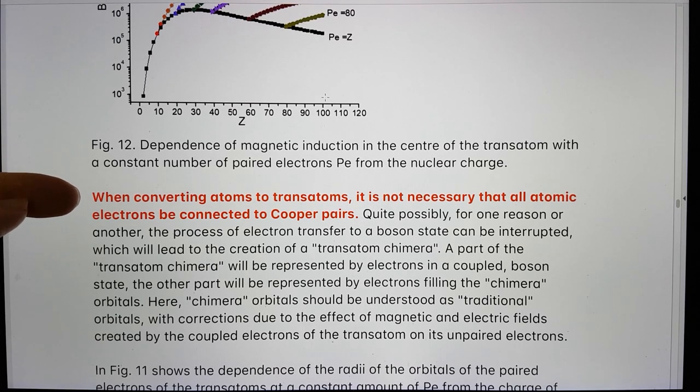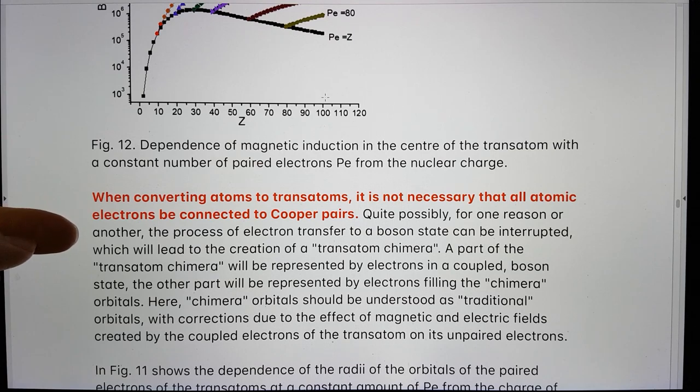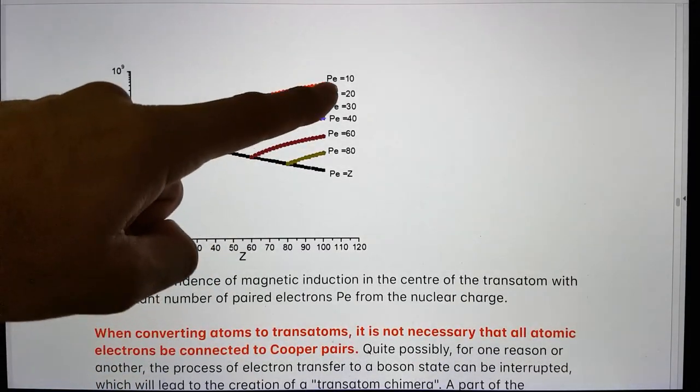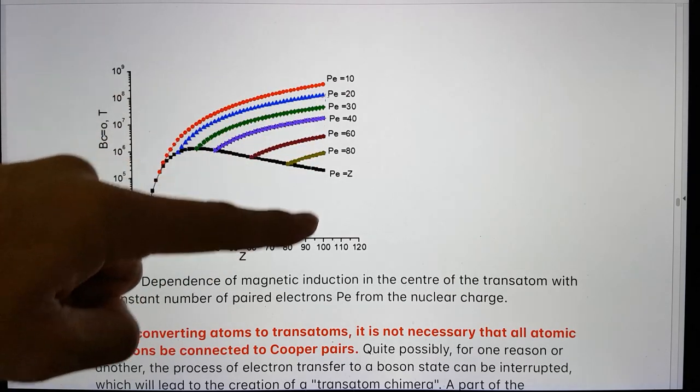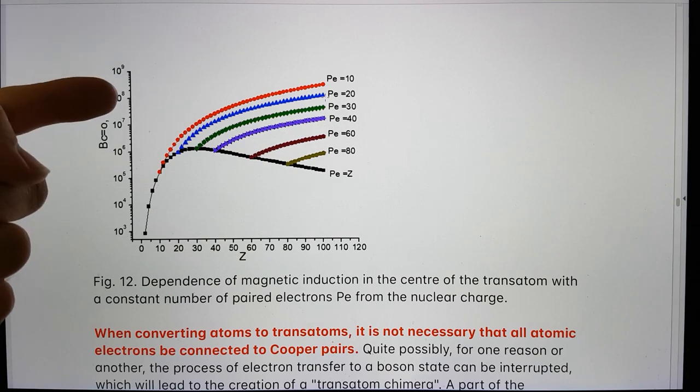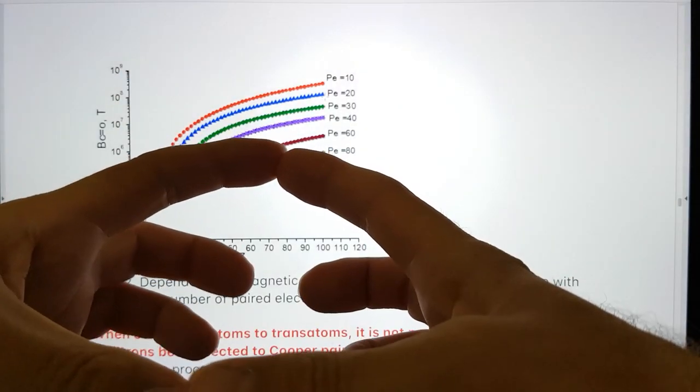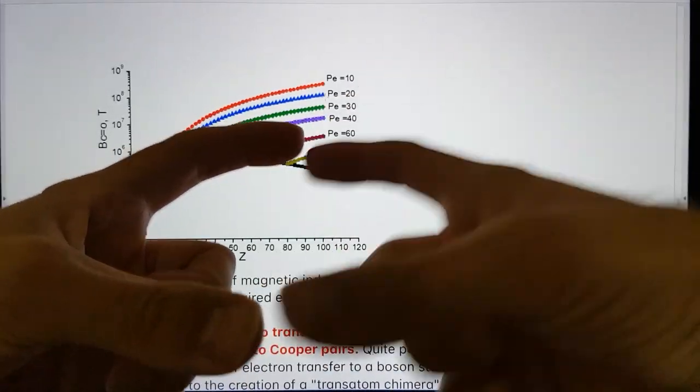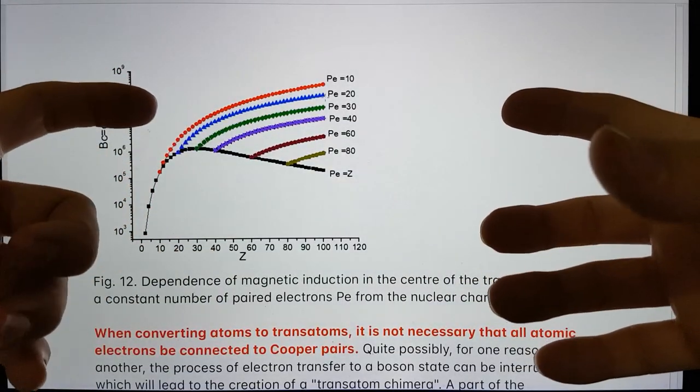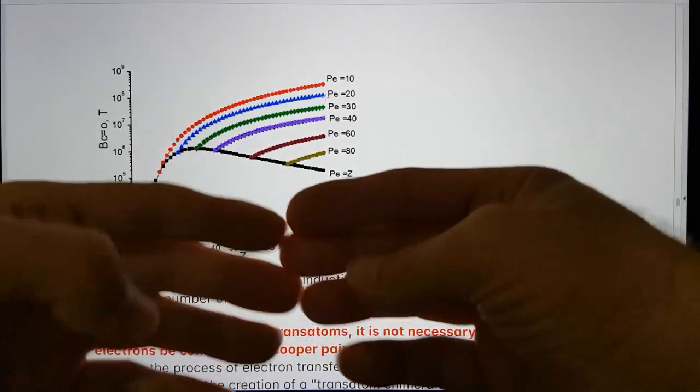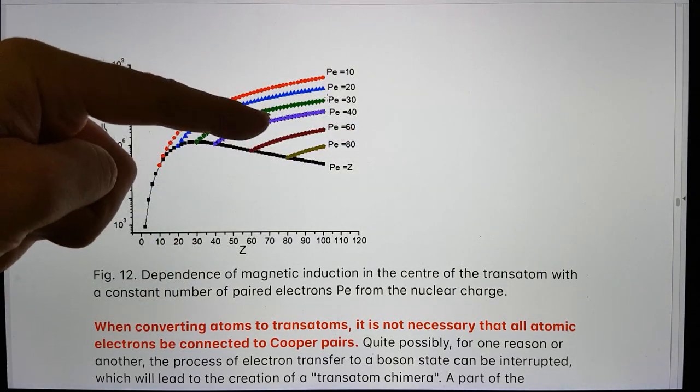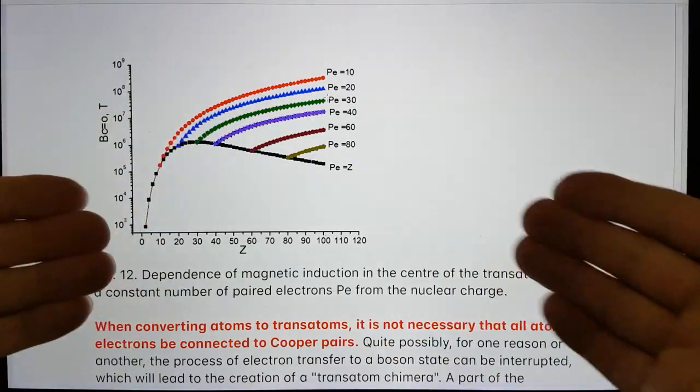So, this I think is very important. When converting atoms to transatoms, it is not necessary that all atomic electrons be connected to Cooper pairs. So, he calls these things a transatom chimera. If you have all of your electrons in Cooper pairs, you don't necessarily get as strong a magnetic field. Because there's a relationship between the amount of electrons in the closest orbital to the nucleus. And if you add more electrons, they move further out in the socialized sense. And so, the overall magnetic field close to the nucleus is less powerful.